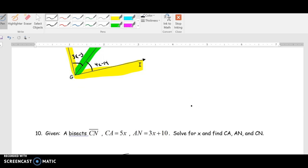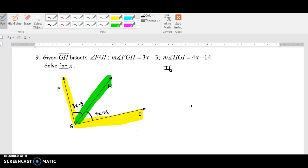So let's get back down there. So if a ray bisects an angle, then we get two congruent angles.